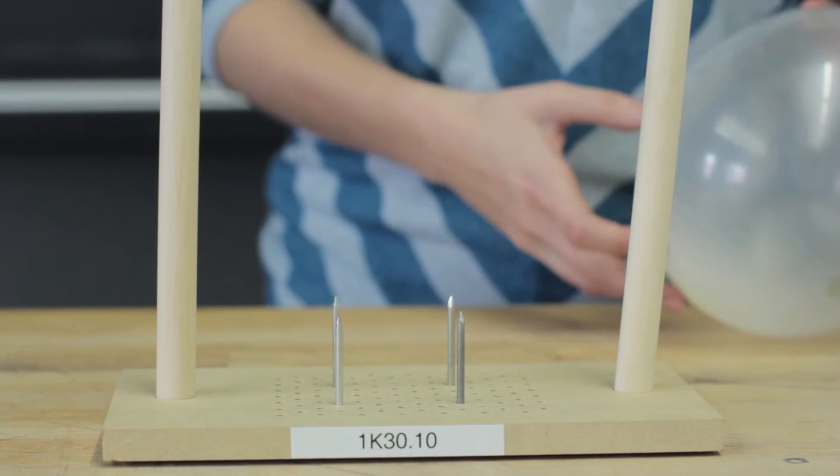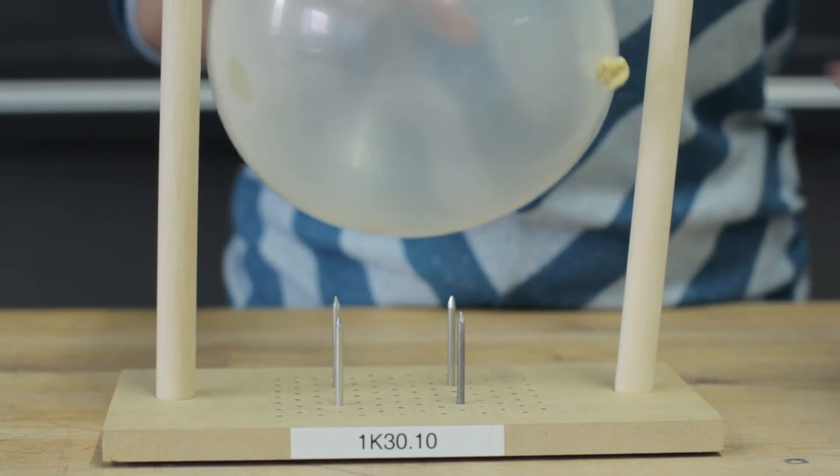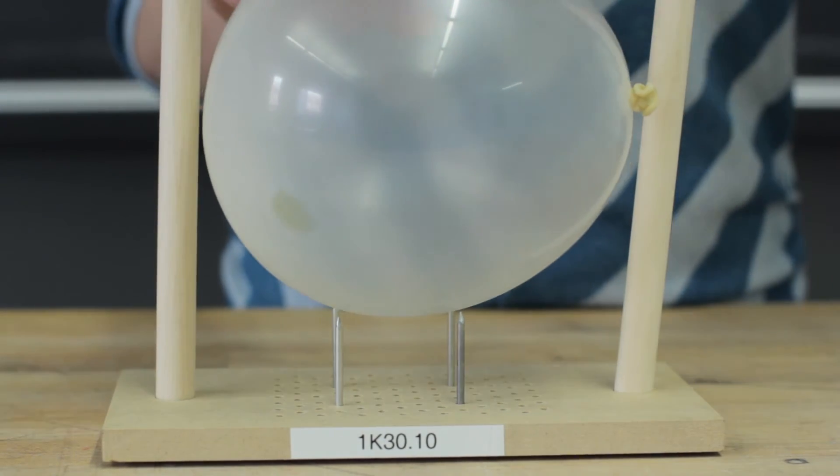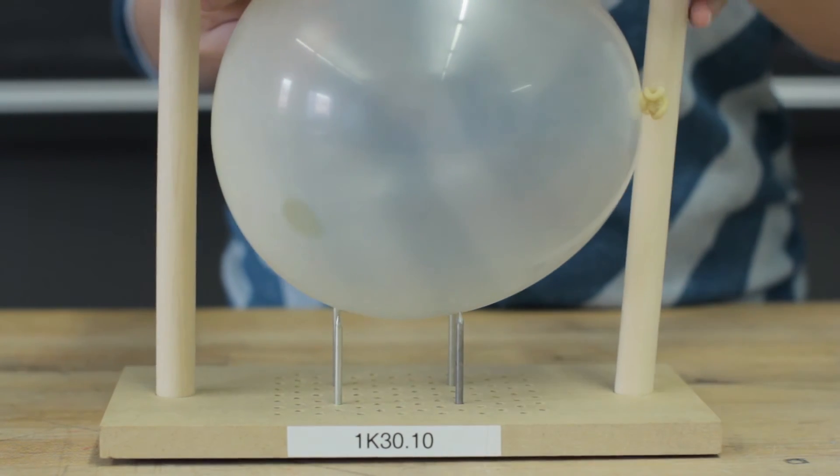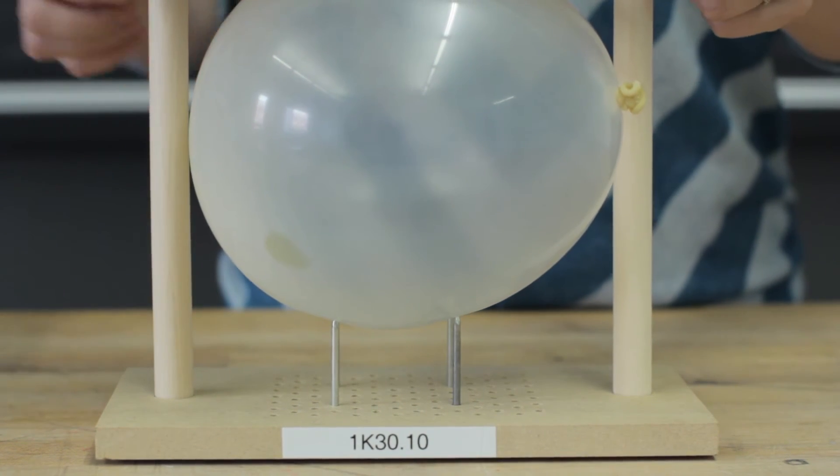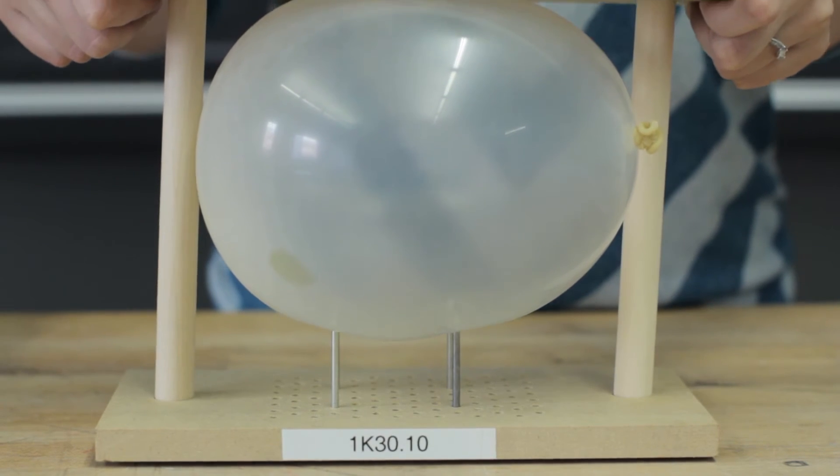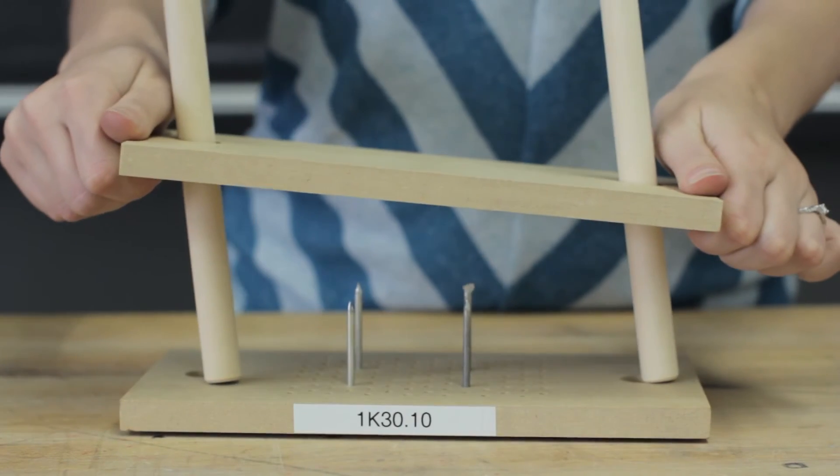The following apparatus, produced by Steve Spangler Science, is a small version of the classic bed of nails and allows one to explore pressure. One can place a balloon in the apparatus and force it down onto one or more nails, four shown here.